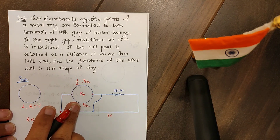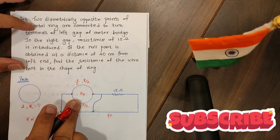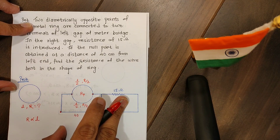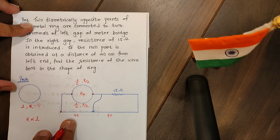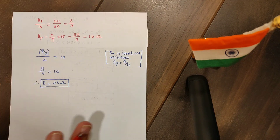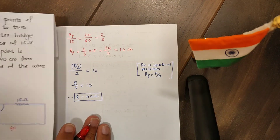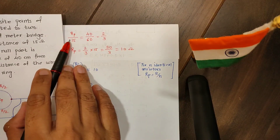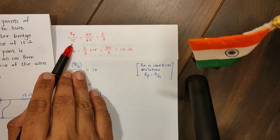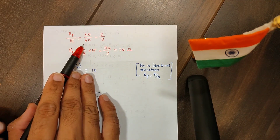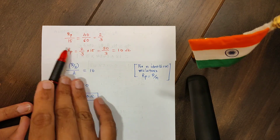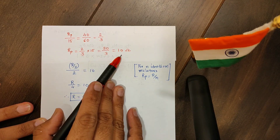As stated, the two parts are connected in parallel. The balancing condition is: resistance in the left gap divided by resistance in the right gap equals the left balancing length divided by the right balancing length. So we have Rp divided by 15 equals 40 over 60, which is 2/3. Therefore Rp equals (2/3) × 15 = 10 ohms.